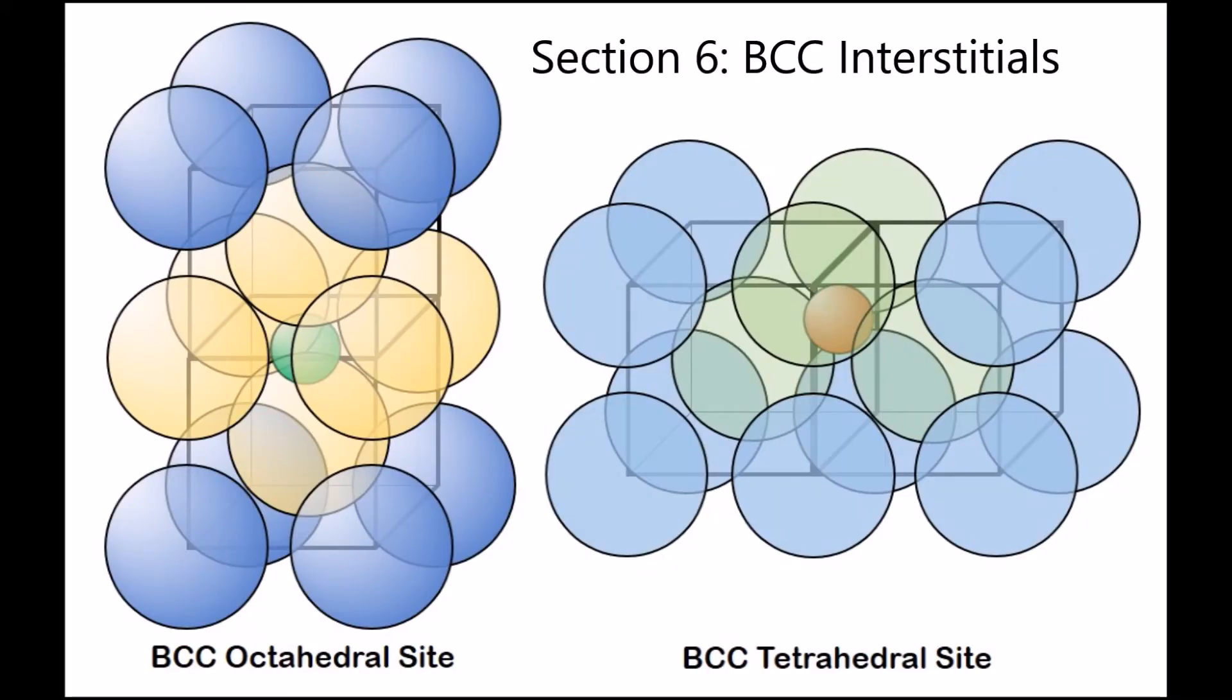Now, we will be obtaining the BCC octahedral hole size and then the BCC tetrahedral hole size. On the board are two diagrams of the non-reduced sphere models, showing the two different interstitial holes. Please pause the video again like last time to take note of these two diagrams.